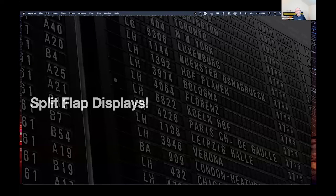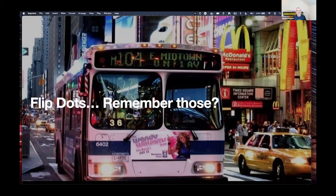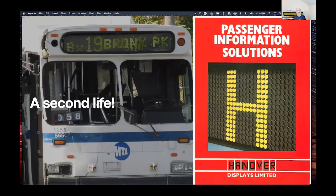Split flap displays are really cool — you can make or buy them from certain maker companies, but they're very expensive because each letter contains the whole alphabet, numbers, and punctuation. They also had the property of no power consumption when not changing. Between split flaps and LEDs were these flip dot displays, which had their moment and then stopped. You might have seen them as railway clocks, or on buses like this New York example which has a backlight.